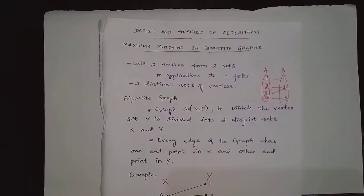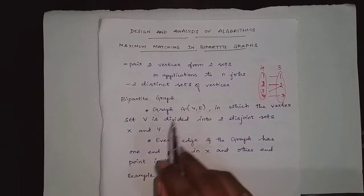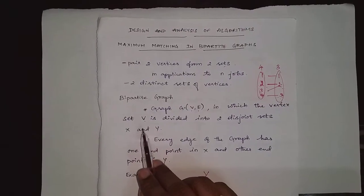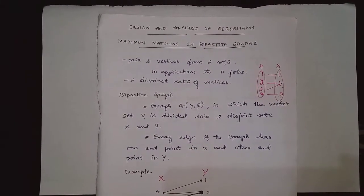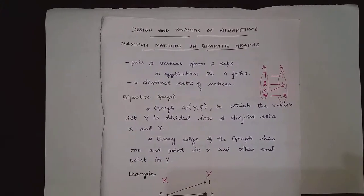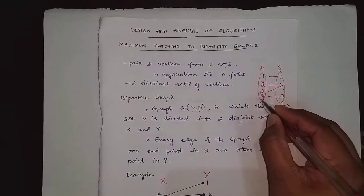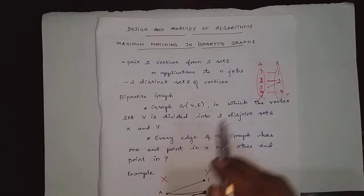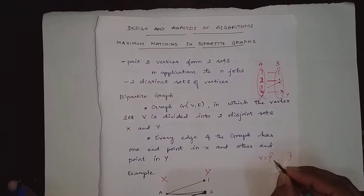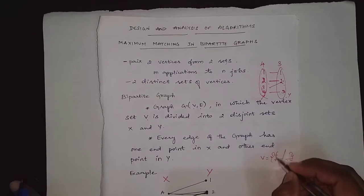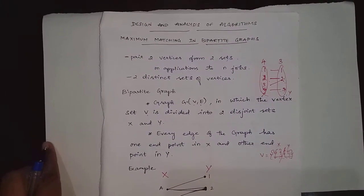What do you mean by bipartite graph? A graph is generally referred to as G = (V, E), where V is vertices and E is the set of edges. In a bipartite graph, we divide the vertex set V into two distinct sets of vertices, X and Y. So the vertex set V will be divided into X and Y, and the edges will connect these two partitions.